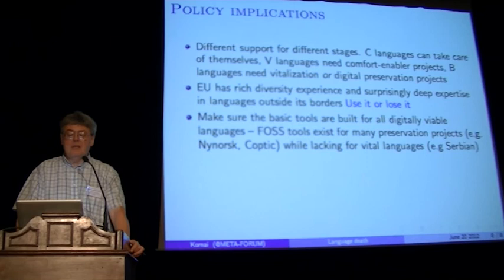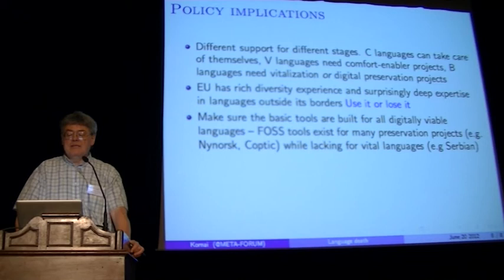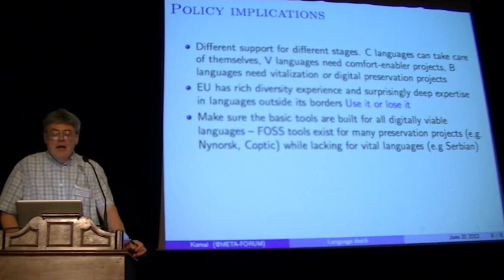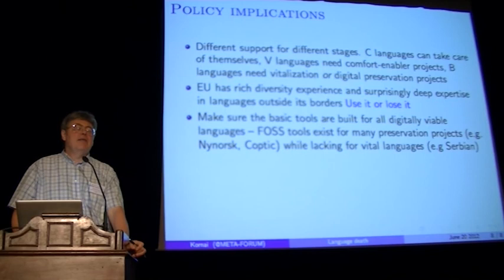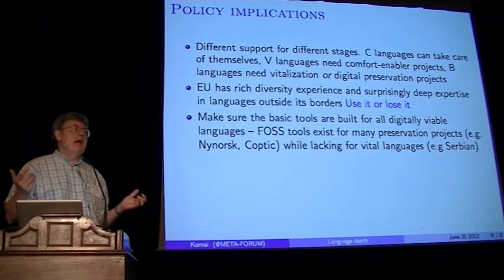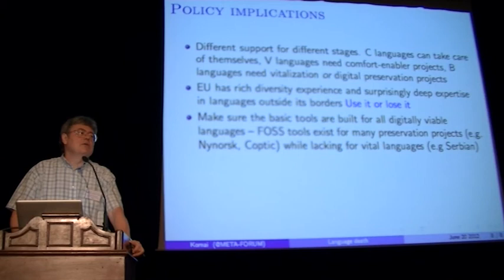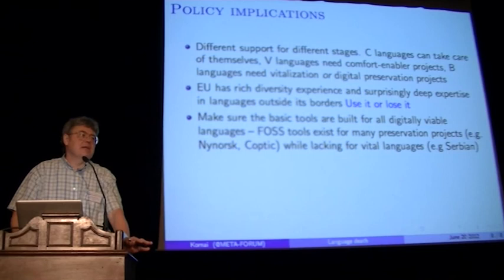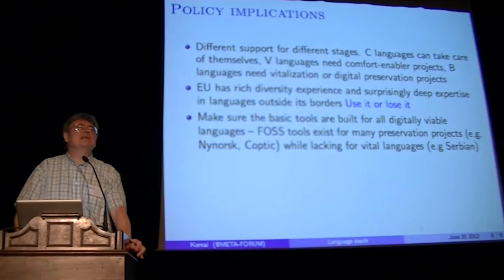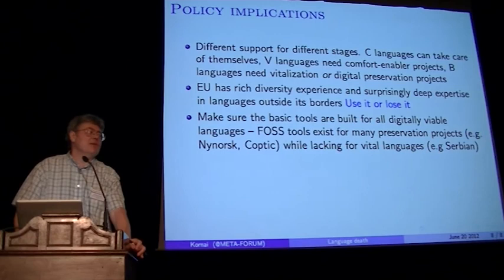It's remarkable that free and open source tools exist for many preservation projects like Nynorsk or Coptic, while lacking for vital languages like Serbian. Once the META-SHARE exercise culminates, we will have a much better picture of exactly what's available where. We restricted ourselves mostly to tools of our own making, including the Hunspell family of morphological analyzers, standard spell checkers, and other things. We also looked at things like whether Jehovah's Witnesses maintain a Bible translation for the language.